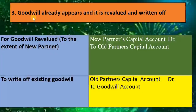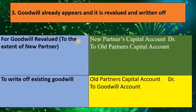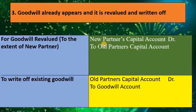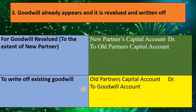The third situation: goodwill already appears in the balance sheet and it is revalued and written off. Here, two transactions are there. For goodwill revaluation, they have the same entry as in the previous case: new partner's capital account debit to old partners capital account. And for goodwill written off, they have a separate entry: old partners capital account debit to goodwill account.